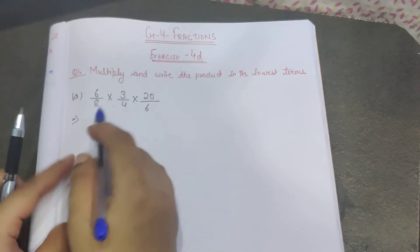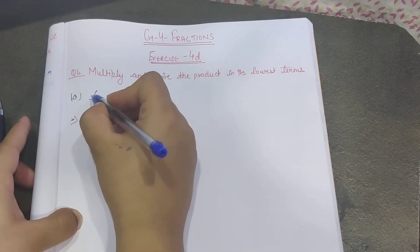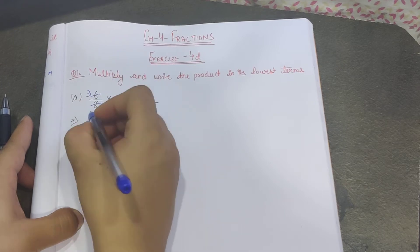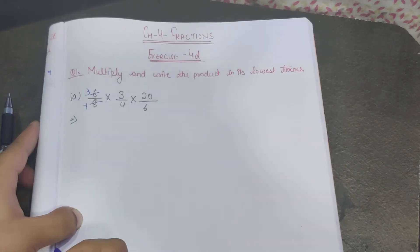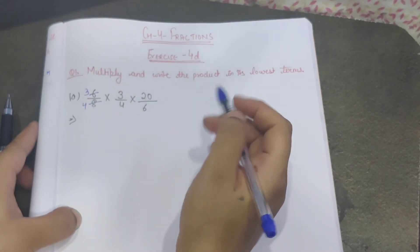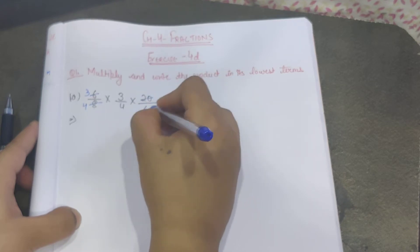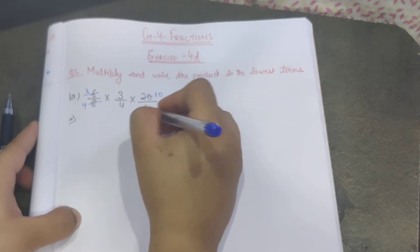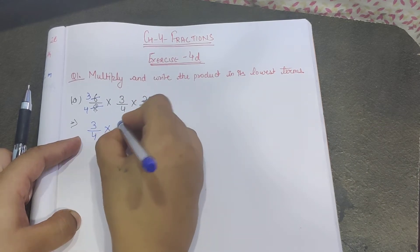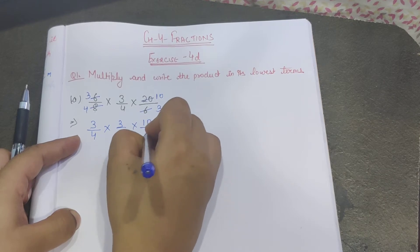Now look here - 6 and 8 have common factors. The common factor of 6 and 8 is 2, which means 6 becomes 3 and 8 becomes 4, and 3 and 4 have no common factors. For 20 and 6, the common factor is 2, so 20 becomes 10 and 6 becomes 3. So I am left with 3/4 multiplied by 10/3.